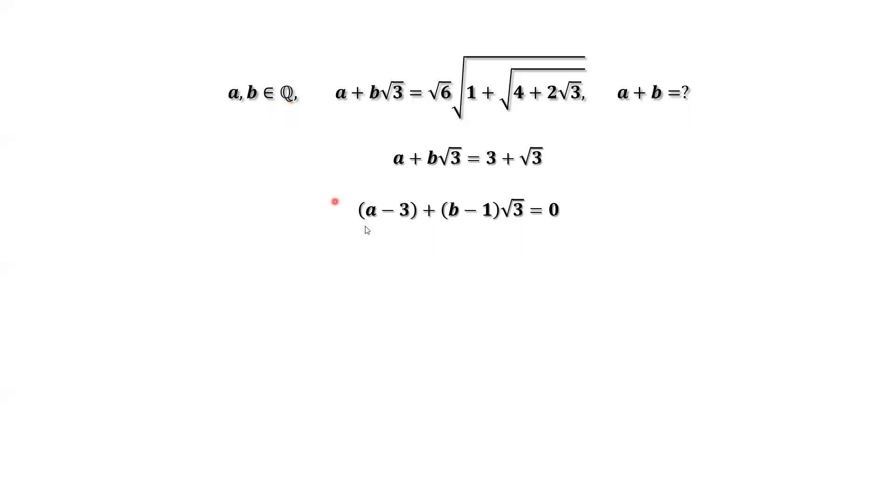Therefore, the rational part a minus 3 equals 0, the irrational part b minus 1 should be equal to 0.